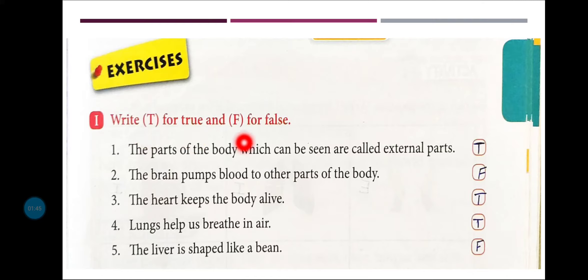Write T for true and F for false. T लिखना है true के लिए — true याने जो सही बात है, उसके लिए हम T लिखेंगे। और false का मतलब होता है जो गलत बात है, उसको false कहते हैं, और उसके लिए हम F लिखेंगे।